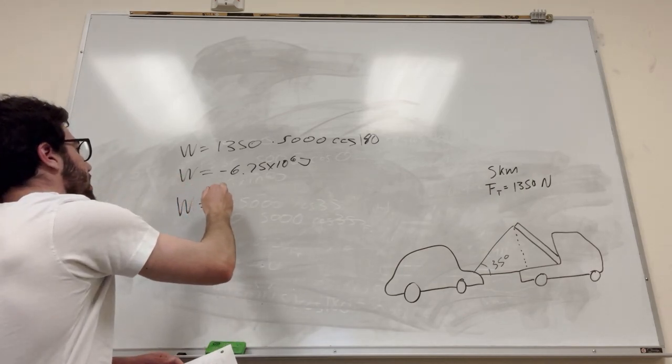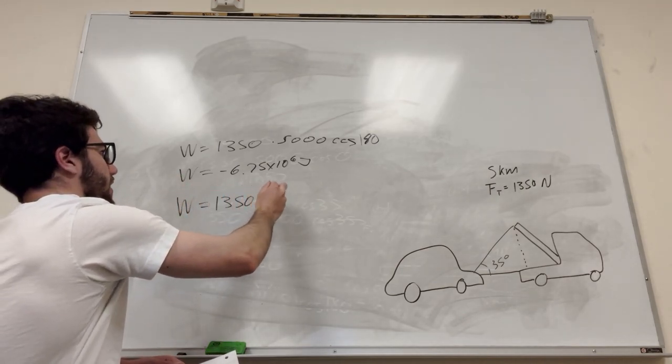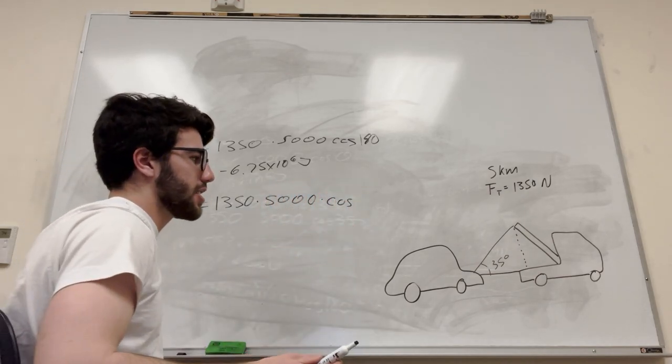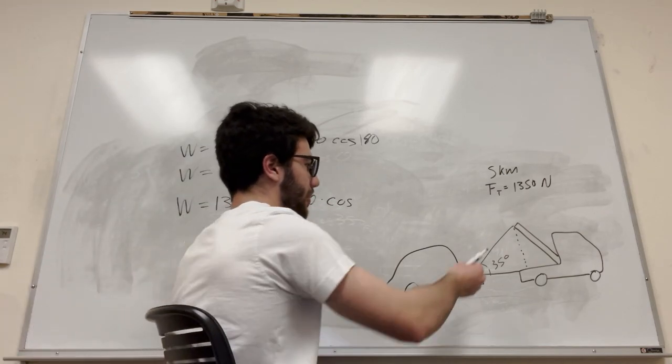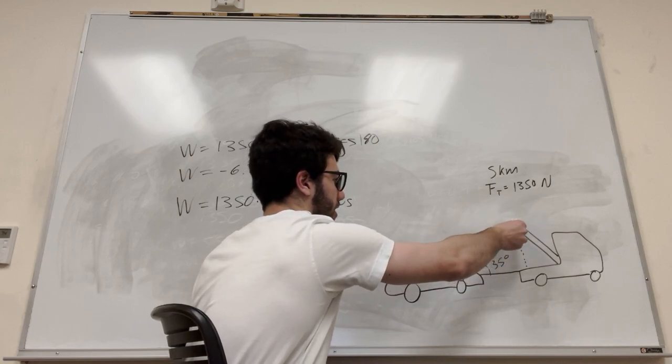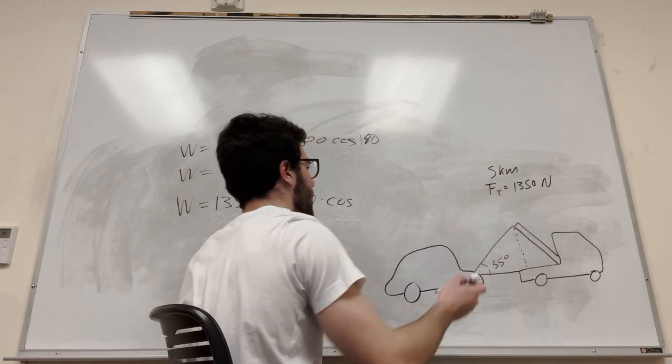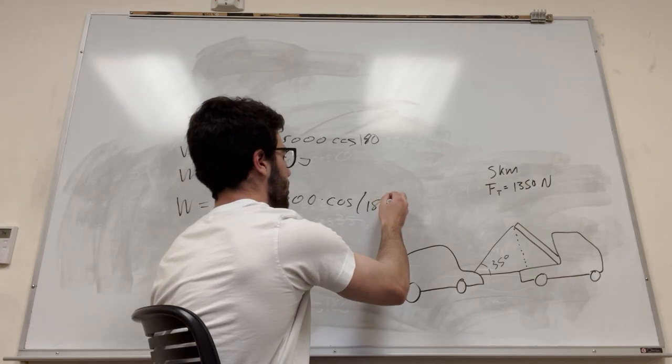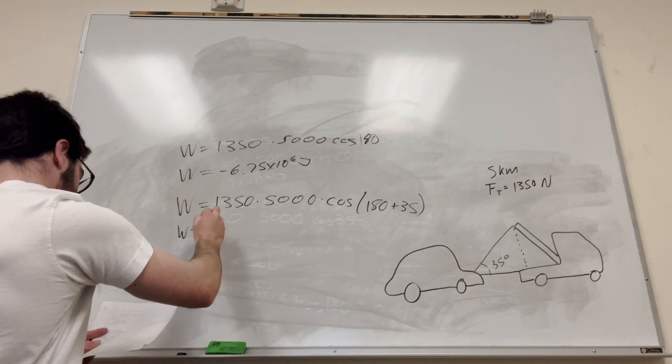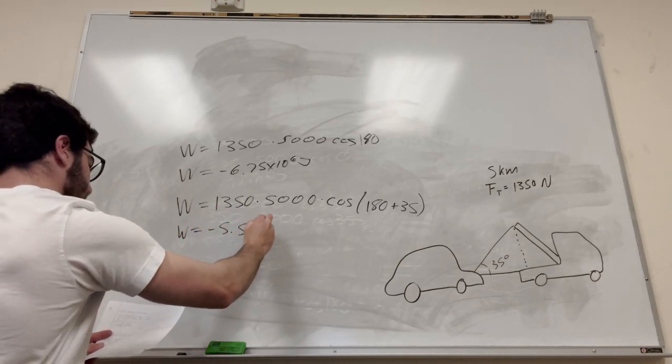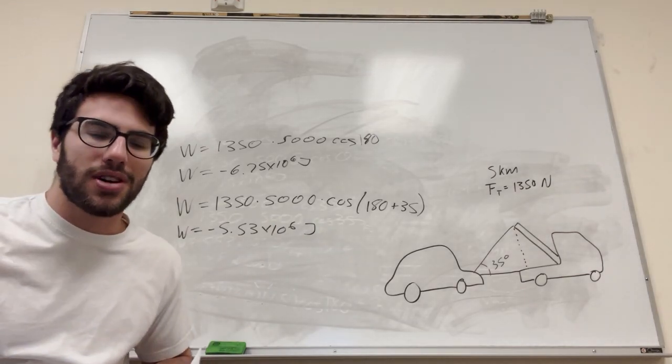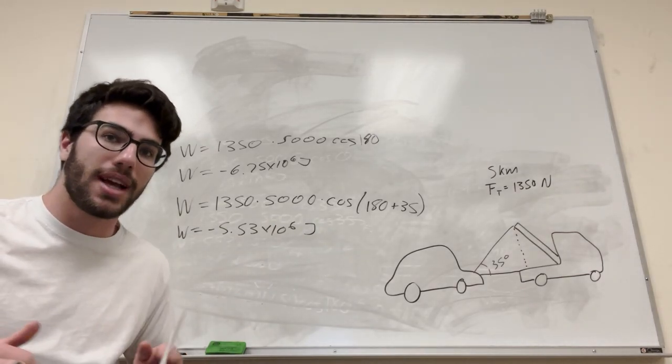So if you do it again for the other one, 1,350, this is the elevated one. So earlier it was 35 degrees. Once again, we know that if this is pulling at 35 degrees on the car, it's going to be the opposite, 180 degrees from there, pulling on the tow truck. So it's going to be 180 plus 35. And if you do this, it's going to be negative 5.53 times 10 to the 6 joules. So there you go. You can see that they cancel each other out. The work done by the car and the work done on the car, it makes sense, right?